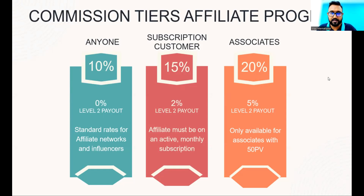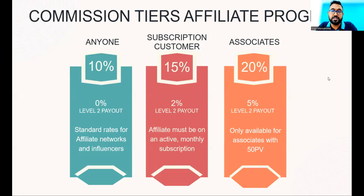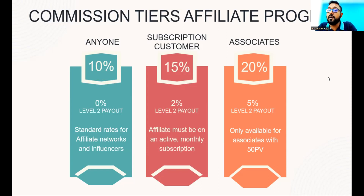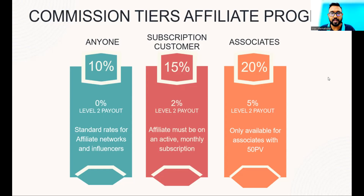Let me reiterate: for this month you do have to be active, and also moving forward. That is only for this month so that you can take the chance for this promotion and carry on into the future. For the others — anyone who wants to join Max International as an affiliate — they will only be able to earn 10% of the sale and there's no level two payout. So anyone who just joins as an affiliate, the standard rates will be applied. And if they then decide to become a subscriber of our Max products, the affiliate must be on an active monthly subscription to earn 15% of affiliate sales, with a second level payout of 2%.